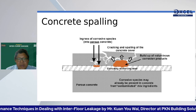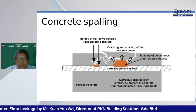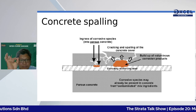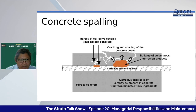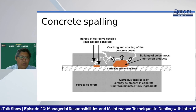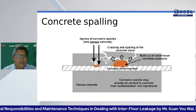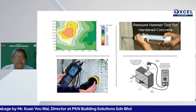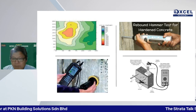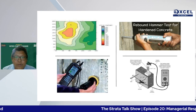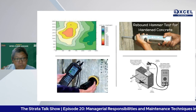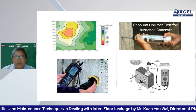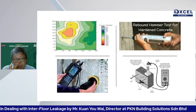When corrosion expands the reinforcement bar, concrete loses compressive strength and tensile strength, causing structural damage. Corrosion can be measured by half-cell corrosion mapping. When concrete delaminates due to corrosion, a hollow sound is heard when knocked — a rebound hammer can then verify the compressive strength integrity.